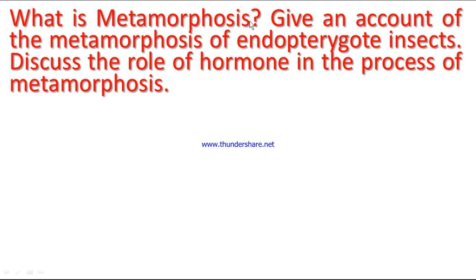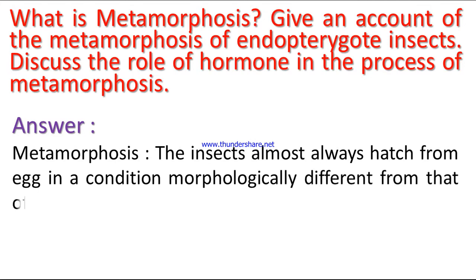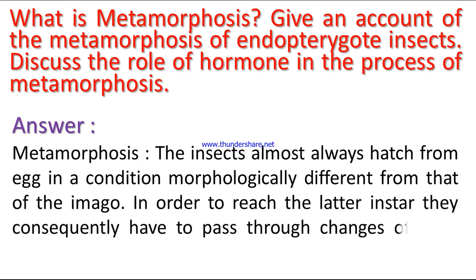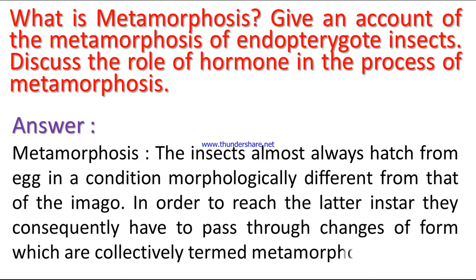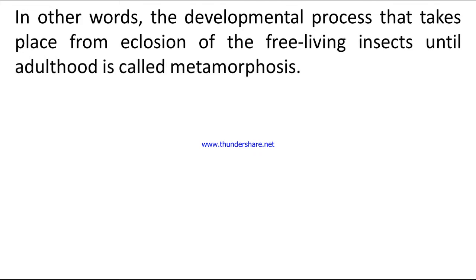What is metamorphosis? The insects almost always hatch from an egg in a condition morphologically different from that of the imago. In order to reach the latter state, they consequently have to pass through changes of form, which are collectively termed metamorphosis. In other words, the developmental process that takes place from eclosion of the free-living insects until adulthood is called metamorphosis.